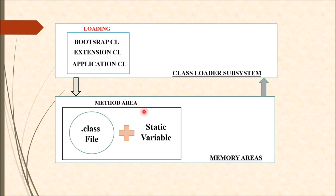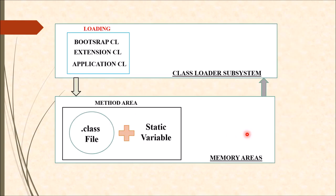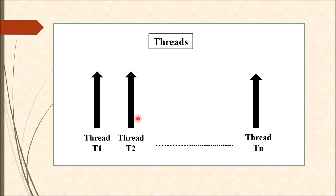Whenever we deal with multithreading, multiple threads can access the data stored inside this method area simultaneously — thread t1, thread t2, up to thread tn can access the data simultaneously. Therefore the data stored inside this method area is not thread safe. In short, method area is responsible for storing all the dot class files along with the static variables.